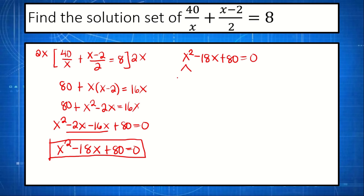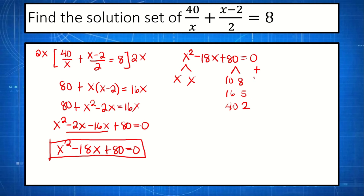First, we factor the first term: x times x. Then we factor the constant term — we list all the factors of 80: 10 times 8, 16 times 5, and 40 times 2. We need two factors that add up to negative 18. We find that 10 plus 8 equals 18, and to make this negative 18, we make both signs negative.